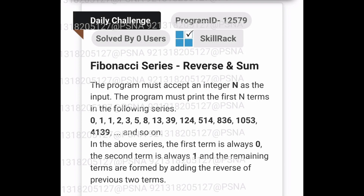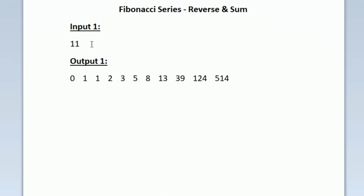This is the question asked in today's skill track daily challenge. In the first line of our input we are given the value of integer n. Here n is equal to 11, so we have to print the first 11 terms in the Fibonacci series as given.